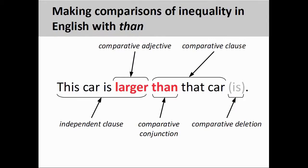A comparative structure consists of two clauses: an independent clause at the beginning of the sentence and a comparative clause at the end of the sentence. An independent clause is so named as it would form a complete sentence were it to stand on its own. The sentence 'that car is larger' makes sense all by itself. As you see on the screen, the independent clause ends with a comparative form of the adjective 'large', which is 'larger'.